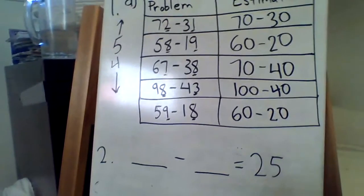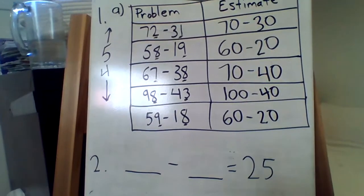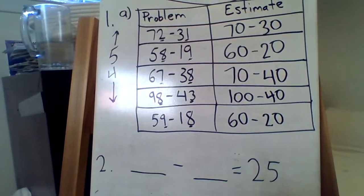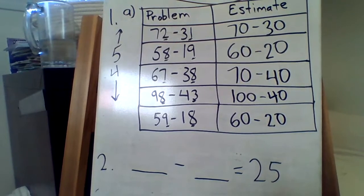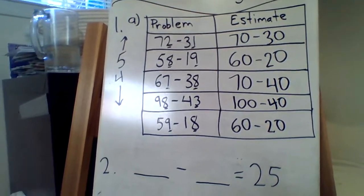Question 2 says the estimated difference of two numbers is 25. What might the numbers be? Give two possible answers.